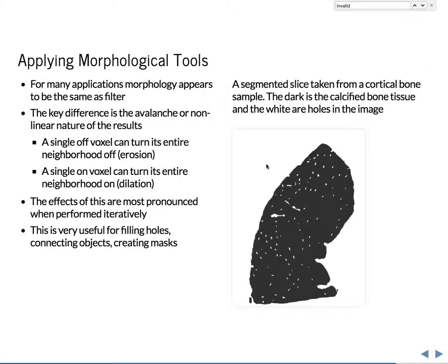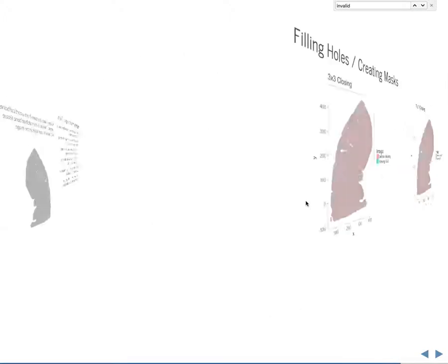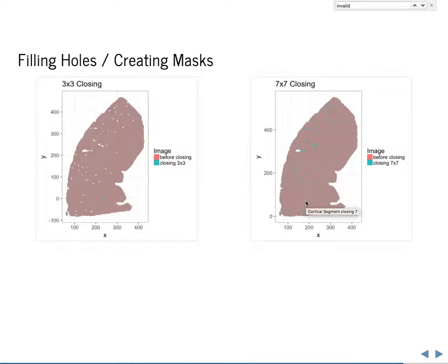Where this actually comes in handy is with a sample like this, where we have a bone sample and we'd like to know what the air fraction is inside of this bone. There is a very clear boundary to this bone, but it's not immediately obvious how you would actually count the pixels that are inside there. One of the easiest things to do is erosion or dilation, where we can perform the closing operation and start to fill in those holes, adding area inside the bone but not outside.